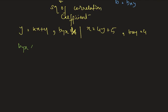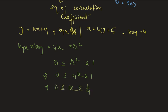Therefore, byx multiplied by bxy results in 4k. Now 4k equals r squared, and we know that r squared is always between 0 and 1. Therefore, 4k is between 0 and 1, so k is between 0 and 1/4.